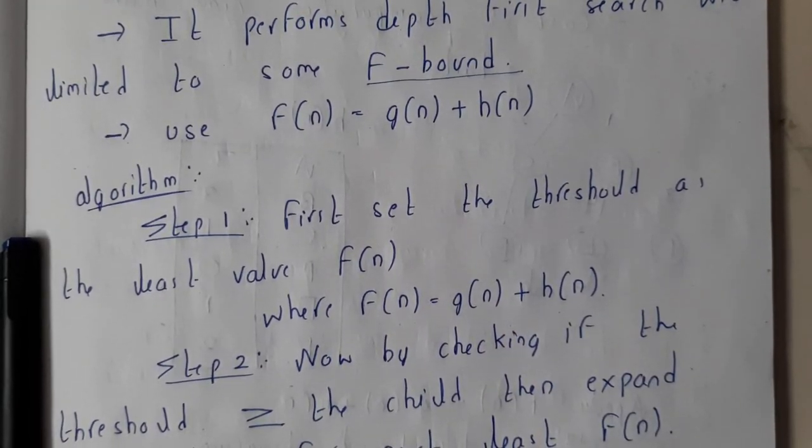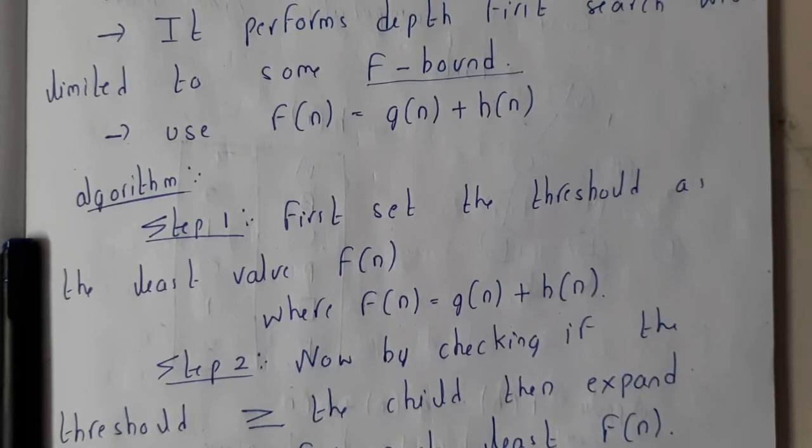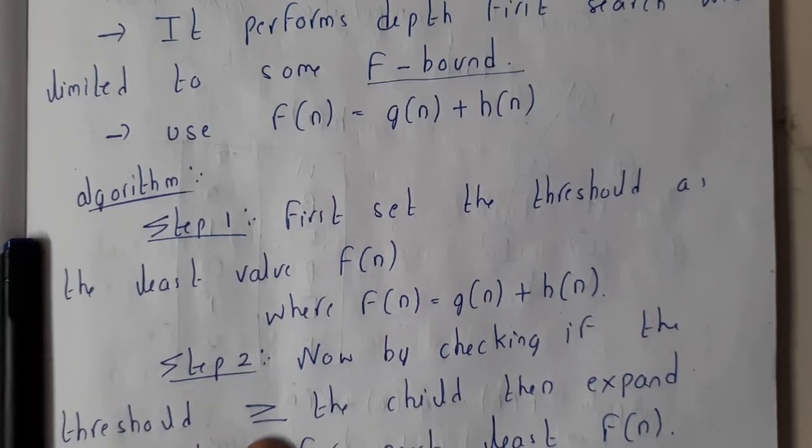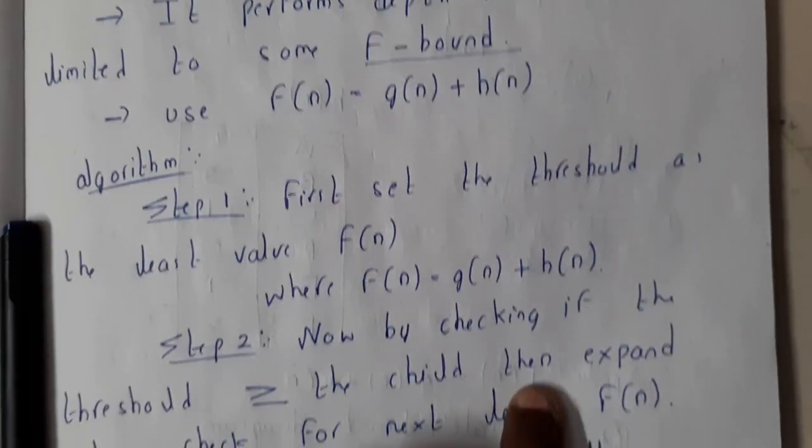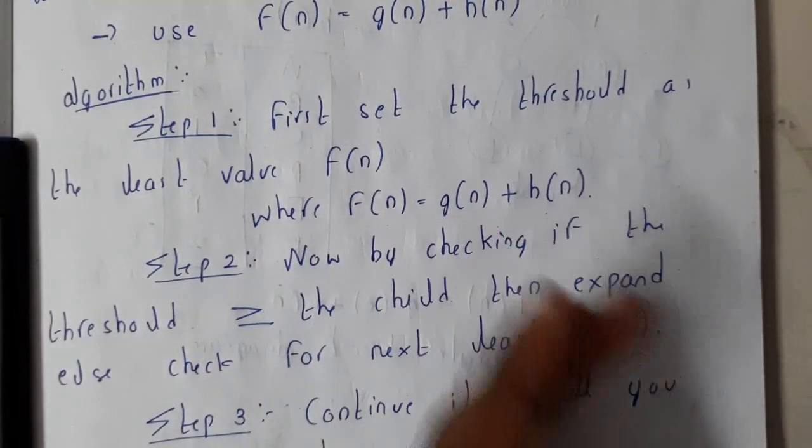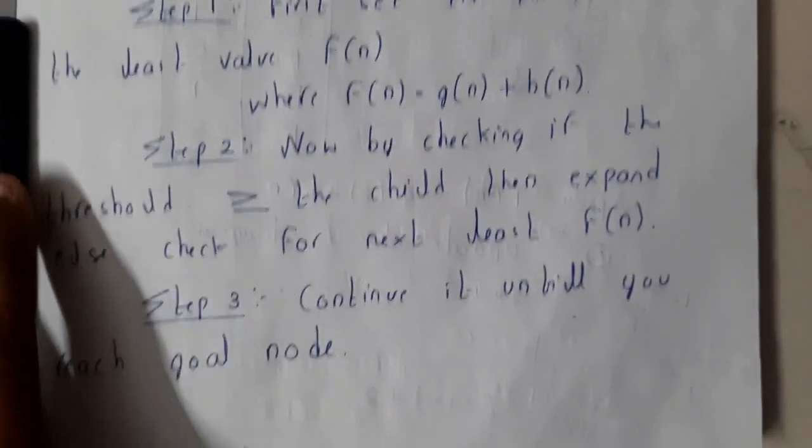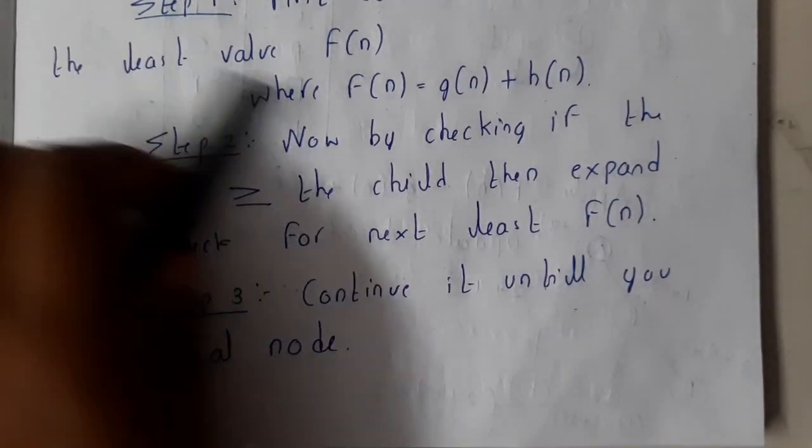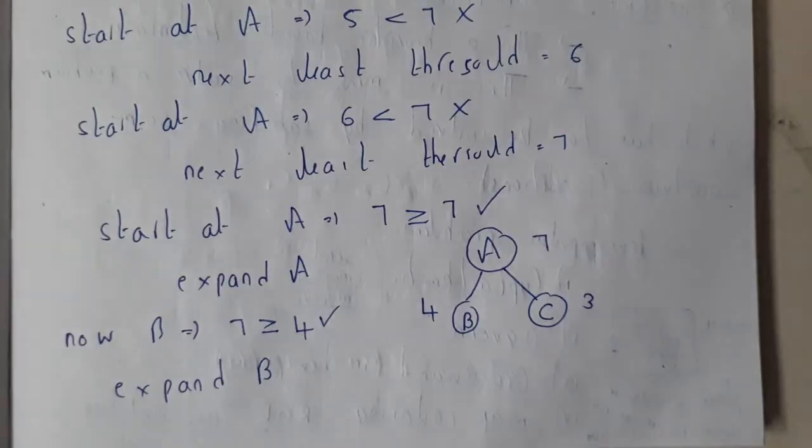So now by checking if the threshold, so you will be setting a small threshold value, like that's the least value. So if the threshold value is matching with the initial node, then we will be checking the child nodes. So now by checking the threshold value, if it is greater than or equal to the child node, then expand, else check the next least f(n). So it continues like a recursion. So one after the other we'll be checking.